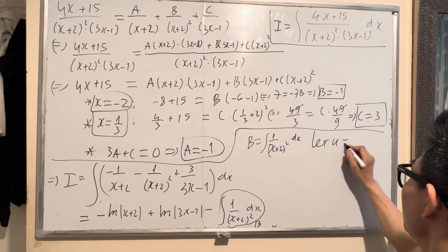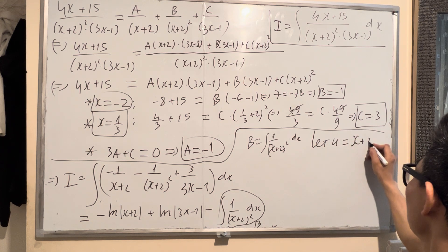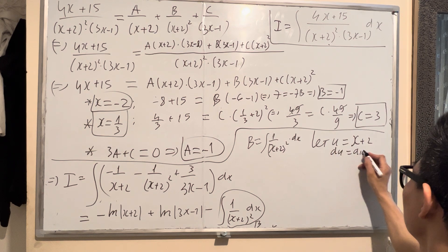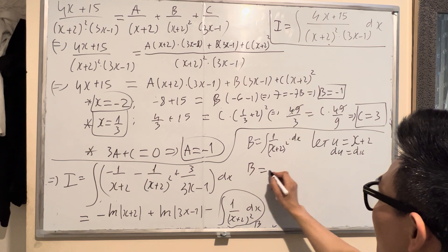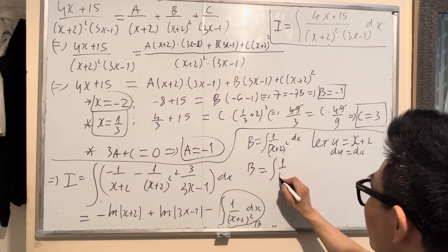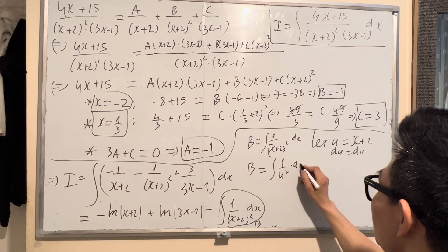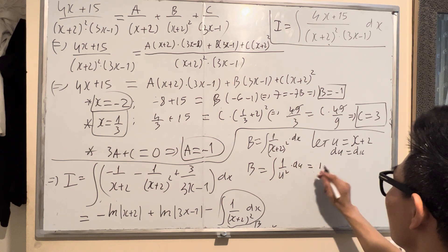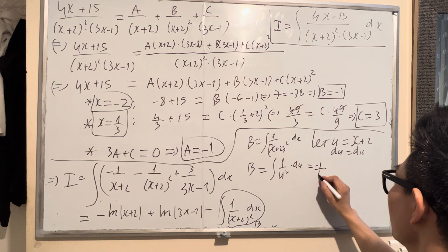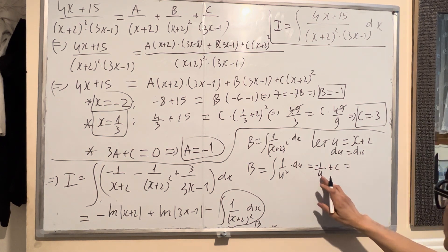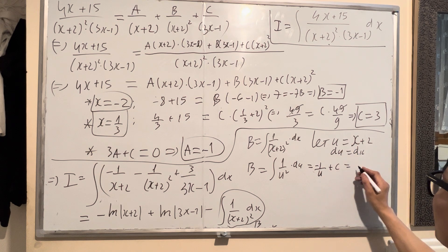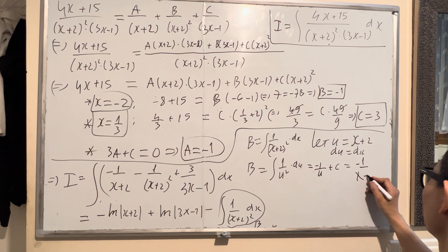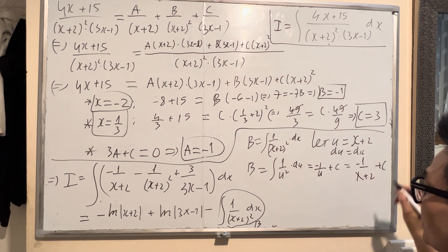Let u equal x plus 2, so du equals dx. So B equals integral of 1 over u squared du. So B equals negative 1 over u plus c. Then substitute u equal x plus 2, so B equals negative 1 over x plus 2 plus c.